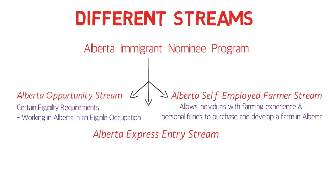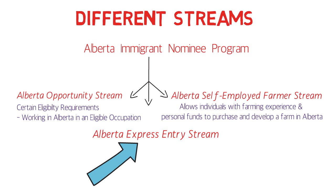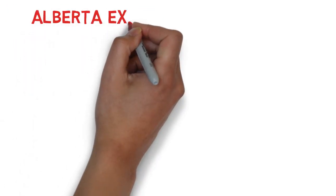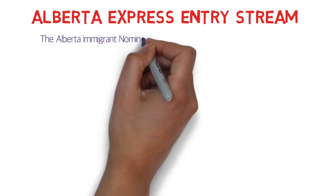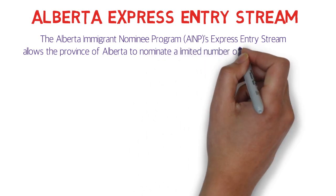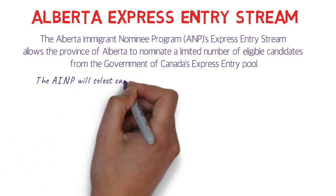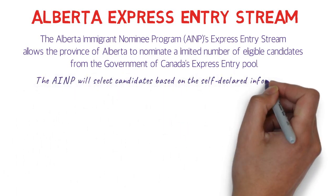Most viewers would be interested in the Alberta Express Entry Stream, so we will discuss it in detail. The AINP Express Entry Stream allows the province of Alberta to nominate a limited number of eligible candidates from the Government of Canada's Express Entry pool. The AINP selects candidates based on the self-declared information in their Express Entry profiles.